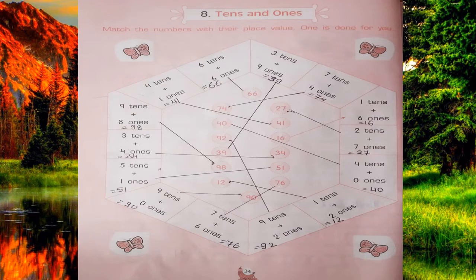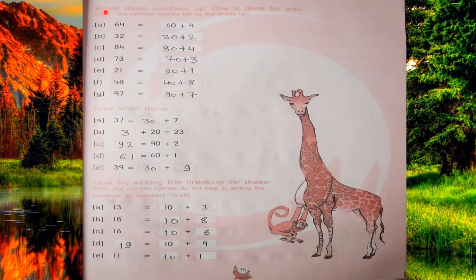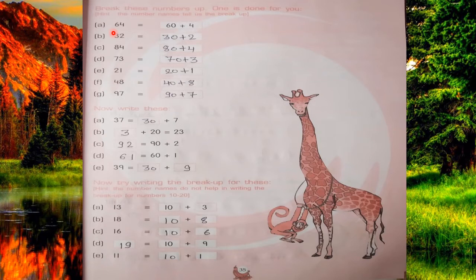Next question: break these numbers up — one is done for you. The number names tell us the breakup. You have to divide into the tens number and the ones number and write them separately. Just like 64 means 60 plus 4. When you speak these numbers, you can get the answer. 64 equals 60 plus 4.